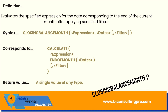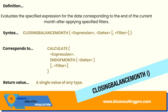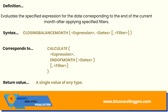Starting with CLOSINGBALANCEMONTH — as you can see on your screen, it evaluates the specified expression for the date corresponding to the end of the current month after applying specified filters. This DAX function is very useful when working in banking, payroll, or statistics. Its syntax is simple: you write CLOSINGBALANCEMONTH, then your expression, then the date, and optionally any filters. It returns a scalar value of any type.